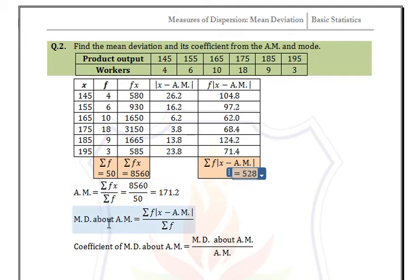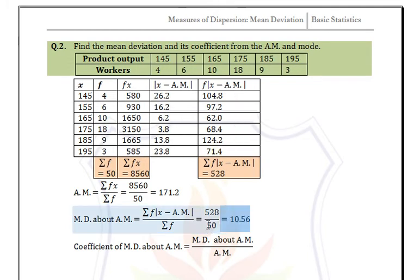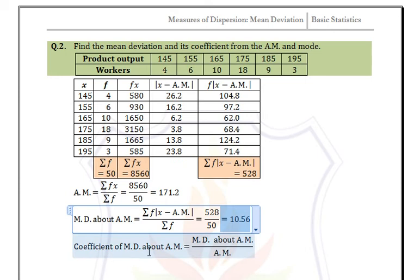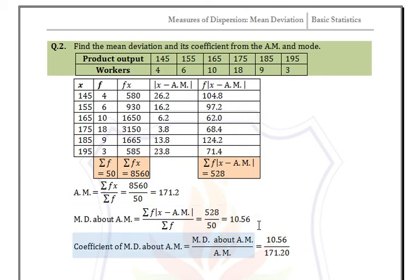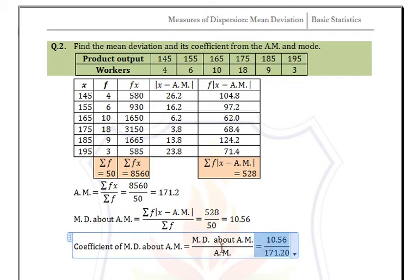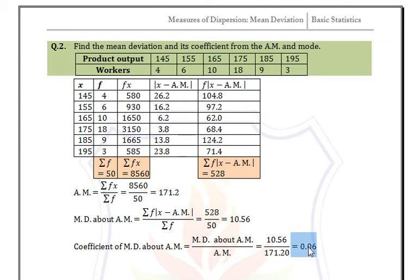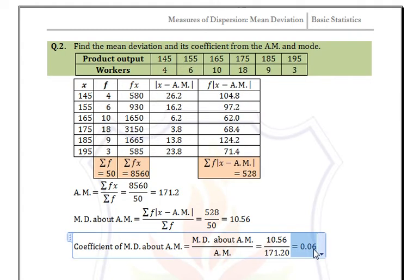The summation of f × |x - mean| is 528. Substituting into the formula: mean deviation about arithmetic mean = 528 / 50 = 10.56. The coefficient of mean deviation about arithmetic mean = 10.56 / 171.20 = 0.06.